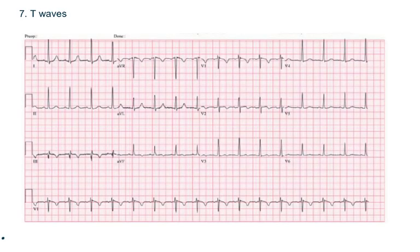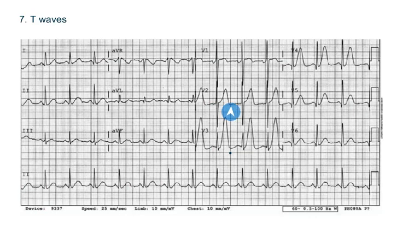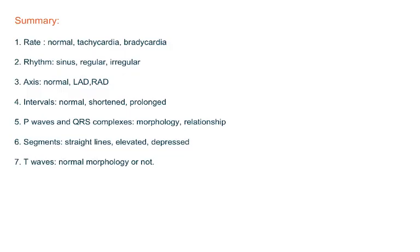The last step is to look at the T-wave. You have to see the shape of the T-wave, because the morphology of T-wave can indicate certain diseases. For example, inverted T-waves can represent ischemic heart disease or a new infarction. Also, tall tented T-waves is a classical sign of hyperkalemia.